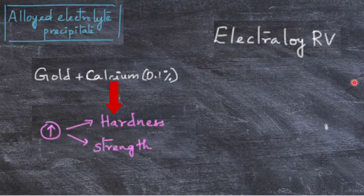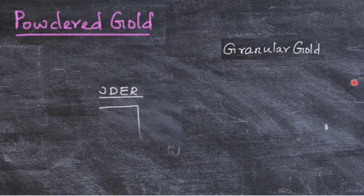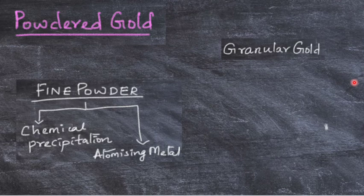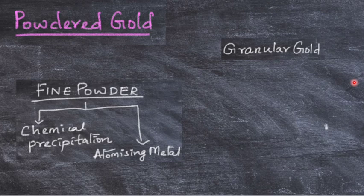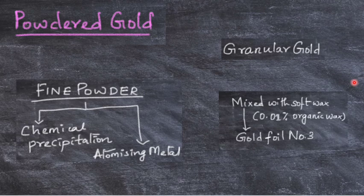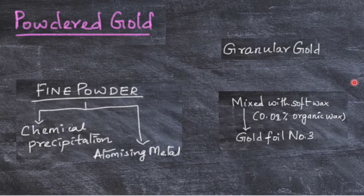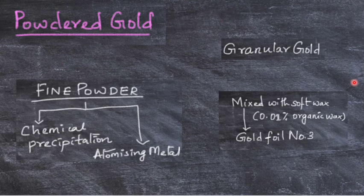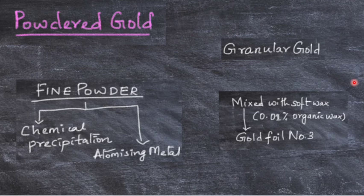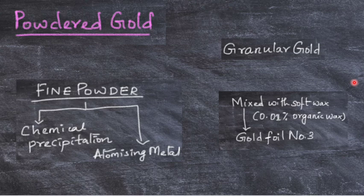The last type of gold is powdered gold or granular gold. Here the fine powder is formed by chemical precipitation or by atomizing the metal. The average particle size is around 15 micrometers, and the pellets have a tendency to disintegrate into agglomerates—they tend to stick to each other. They mix the gold with soft wax, like 0.01% of organic wax, and wrap it around gold foil number 3. There is no sintering or heating, just wrapping. This foil and wax allow it to remain in powdered form during condensation. The pellets during compaction are heated before being placed inside so that the wax is removed, and then it is kept inside the cavity.